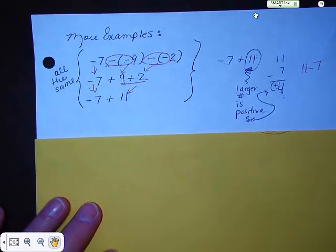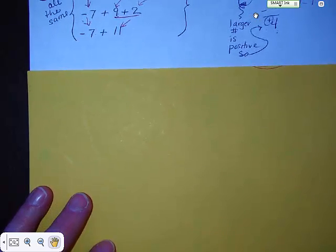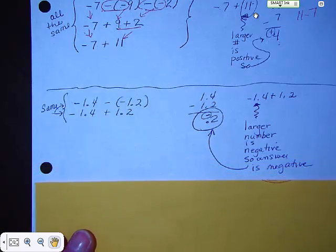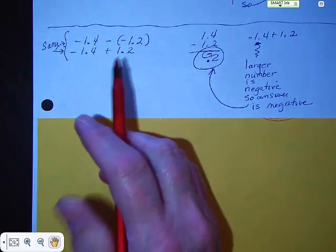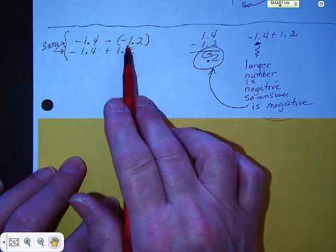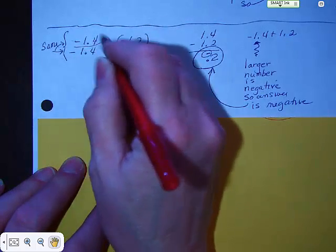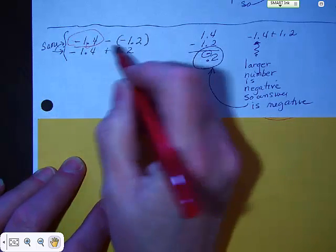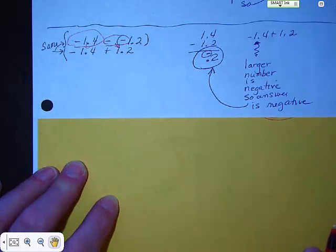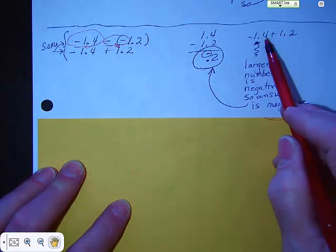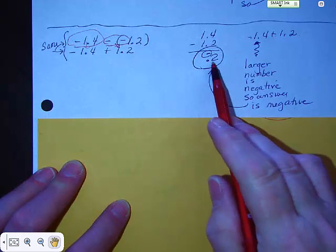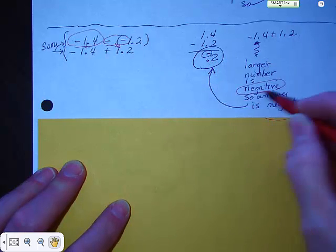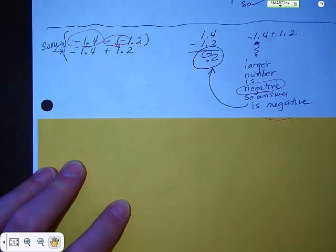This works with decimals the same as with whole numbers. You've got negative 1.4 minus a minus 1.2. The negative 1.4 does not change, but you've got two negatives in a row, so the 1.2 becomes positive. So you have negative 1.4 plus 1.2. We have a negative and a positive: we subtract and take the sign of the larger number. We get 0.2, but the larger number is negative, so the answer is negative 0.2.